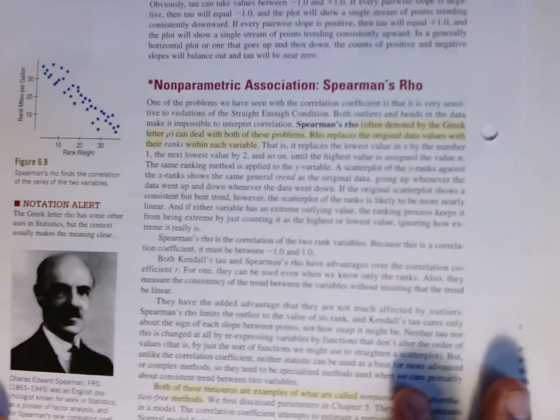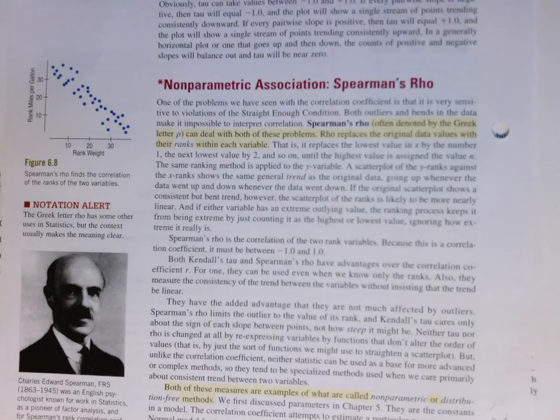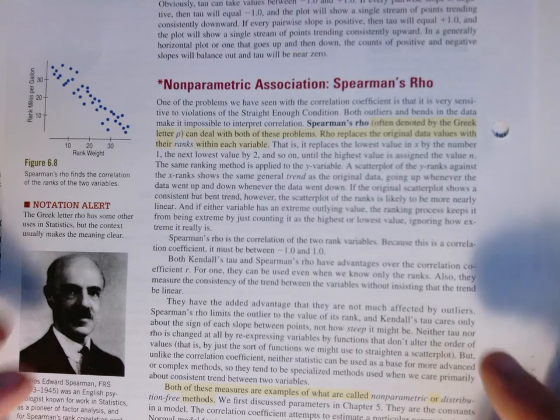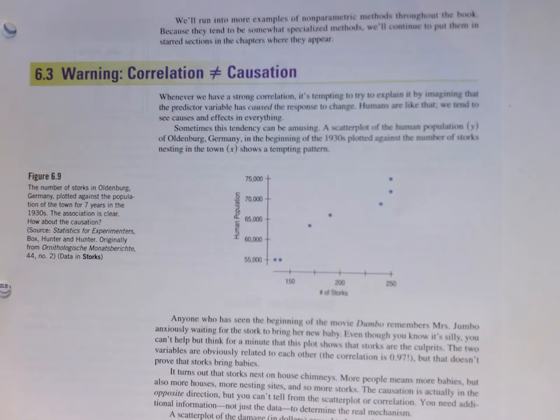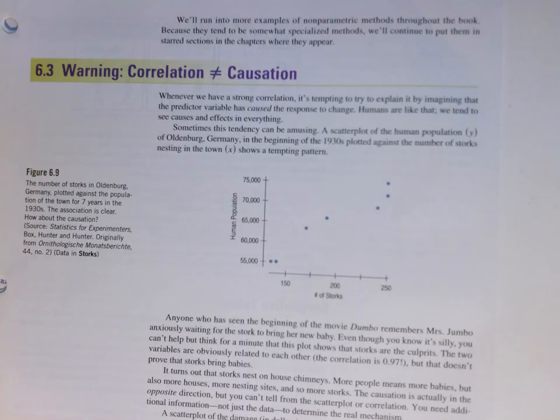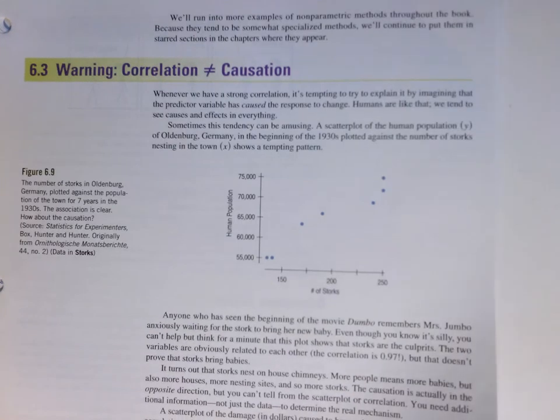Spearman's rho, however, is going to be an important thing that we talk about. It's the correlation of two rank variables. So please read the nonparametric association Spearman rho section. You've heard the idea that correlation is not equal to causation. We're going to move beyond that in the course, but it's important to be thinking about this.